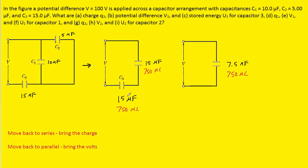What we don't know on these two capacitors is the voltage. But we can calculate it using V = Q/C. For example, on this capacitor, taking the charge divided by the capacitance gives exactly 50 volts. And on the other one, we also get 50 volts. So these two capacitors are now complete — we have the volts, capacitance, and charge.